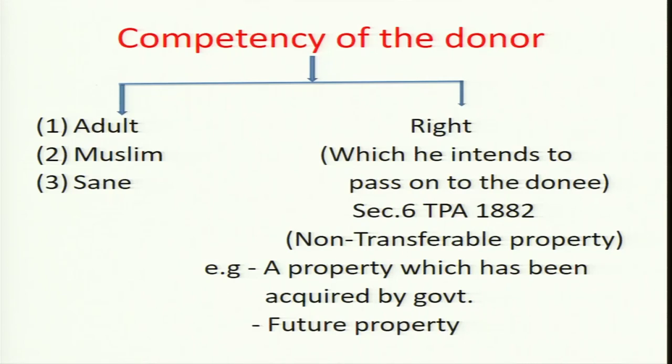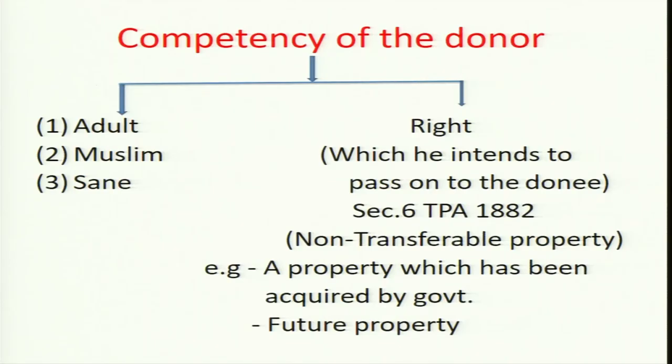The second important requirement is that the donor must be the owner of the property on the date of making the gift — he must have absolute ownership. Without having ownership over the property, if a donor makes a gift, that gift is no gift in the eyes of law. This is also an important element — the donor must have absolute ownership over the property which he is going to transfer by way of gift.